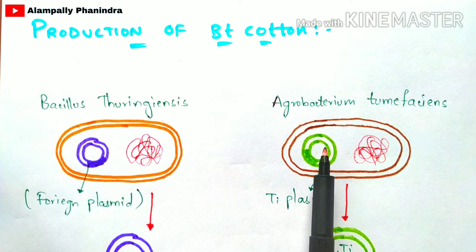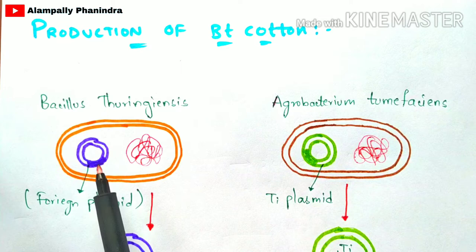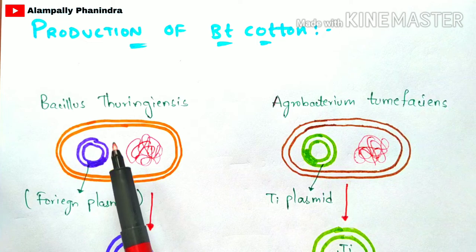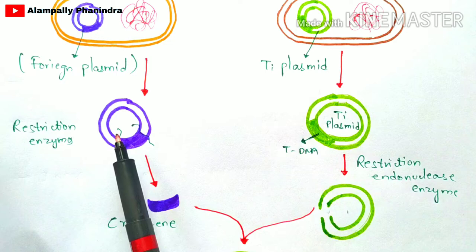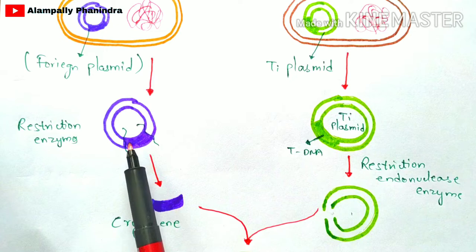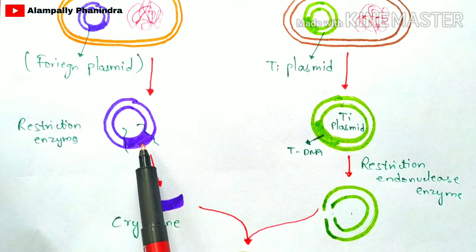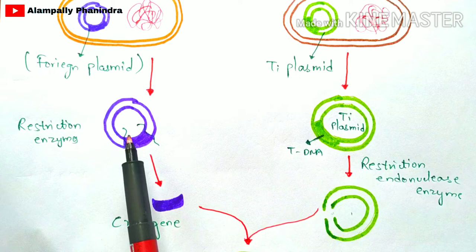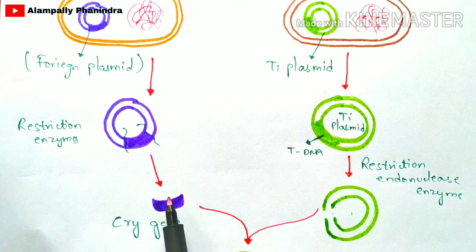Both of these bacteria consist of a plasmid. The plasmid from Bacillus thuringiensis is considered a foreign plasmid, and the Agrobacterium tumefaciens consists of the Ti plasmid. This foreign plasmid plays a major and vital role in killing the insect. The foreign plasmid is extracted from Bacillus thuringiensis, and the shaded region drawn here is the cry gene — this is the only gene that helps in killing the insect. To isolate the cry gene from the plasmid, restriction enzymes are added, which cleave the cry gene at the restriction site.